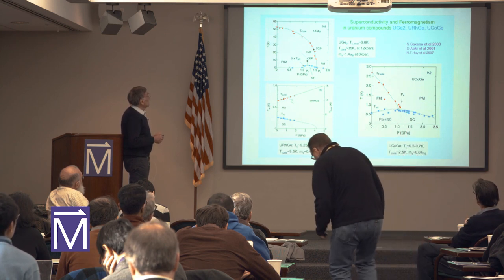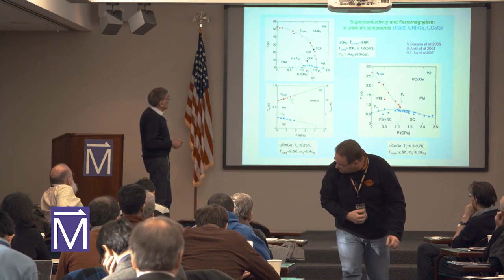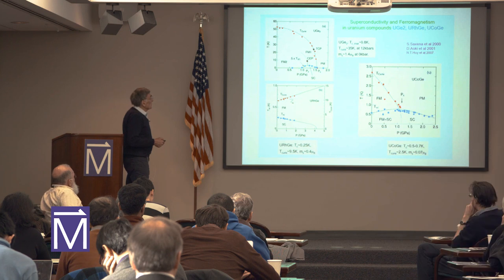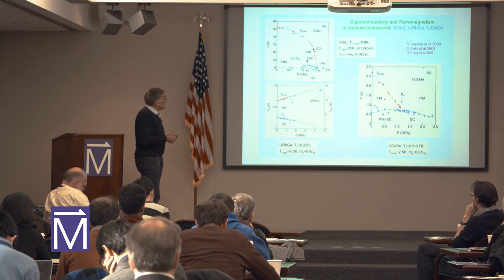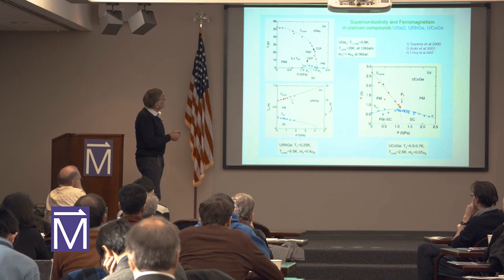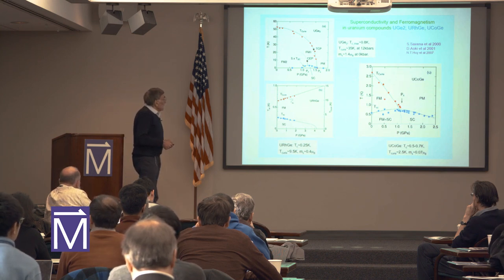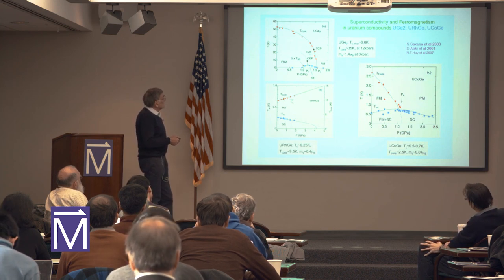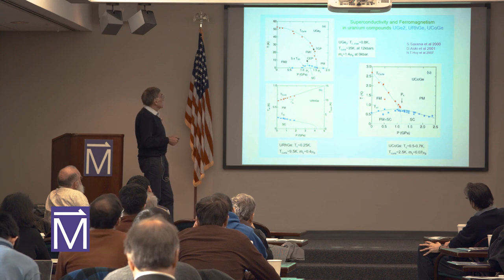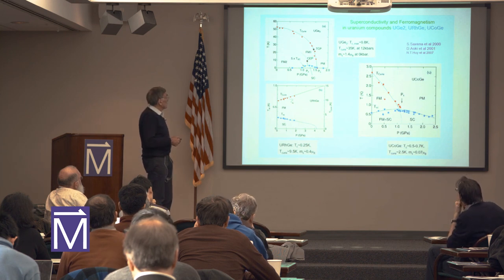In UCoGe, the contribution around cobalt is very tiny in comparison with uranium. We deal with a dual system which has local and itinerant features of the electronic subsystem. For UGe2, the Curie temperature is more than 50 Kelvin, and superconductivity develops at high enough pressure, above one gigapascal. This superconductivity exists below a first-order type transition, and the Curie temperature varies with pressure until a tricritical point after which there is a first-order transition.